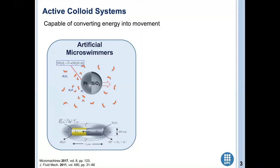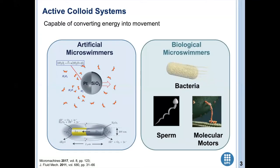On the other hand, we have the biological microswimmers, like bacteria, sperm cells, and molecular motors. These have the ability to swim through different chemical or metabolical reactions, or even physical interactions. I will focus on this type of biological chemical systems as movement actuators in this presentation.